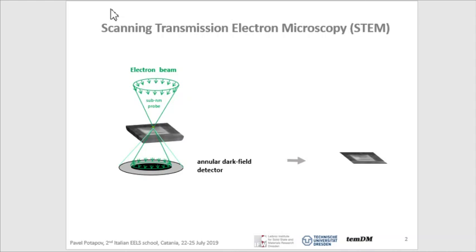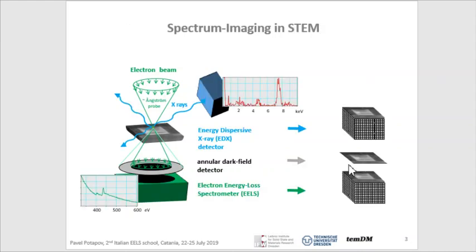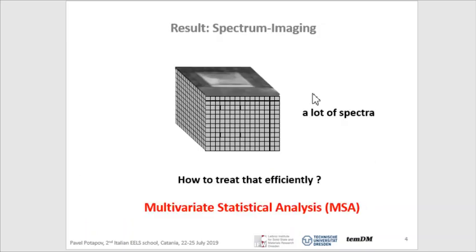We were talking about scanning transmission electron microscopy, STEM, where we focus our electron beam into a small probe, scan it across the sample with recording. As a minimum we record high-angle scattered electrons, which forms an image. But also we can install an electron energy loss spectrometer and an energy dispersive X-ray detector at the side and turn our image into so-called spectrum images, where each pixel is equipped with a spectrum. As a result we get some kind of data cube.